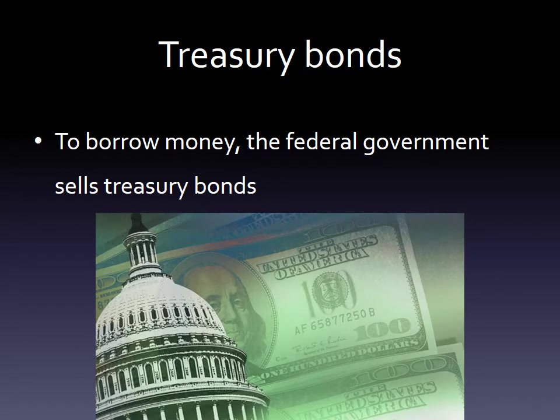So how does the government borrow money? If they are spending more than they are bringing in — deficits, which we have been running since 2002 — the answer is that they sell treasury bonds. The federal government sells treasury bonds to borrow money. Anyone in the world can buy a bond, and by doing so you are essentially allowing the government to borrow money for a specified amount of time. When that time is up, the government owes you that money back, and they pay you interest along the way. You buy a bond because it is one of the safest things you can do with your money — you won't get rich, but your money will be very safe.